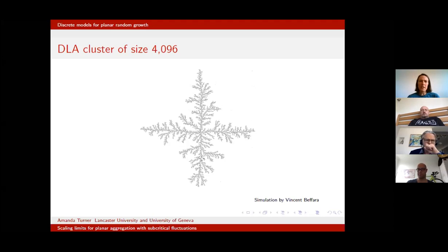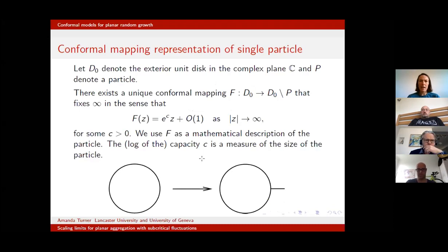What we actually want is a model that's already isotropic before we start to study it. So how can we construct random growth in a non-lattice way? The solution comes from complex analysis, in particular from the Riemann mapping theorem.